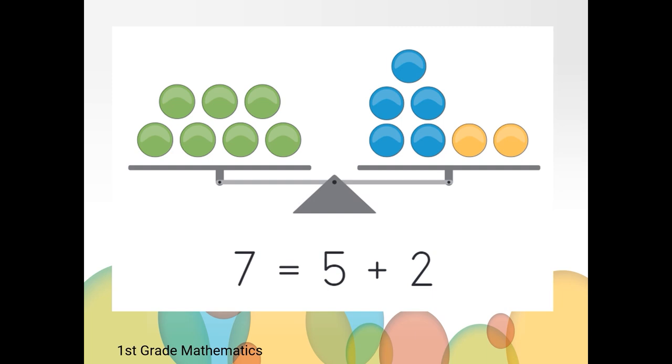Did one of the equations or number sentences that you wrote look like this? This is a true number sentence because there are seven green counters on one side and seven total counters on the other side. There are blue and orange counters on the other side. We know that there are seven blue and orange counters because we can see five blue counters and two orange counters. We could use a counting on strategy by saying five blue then saying six seven when we count on those orange counters. Our number sentence could be seven equals or is the same as five plus two.